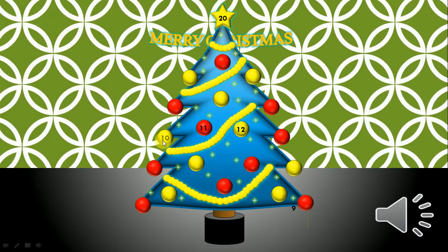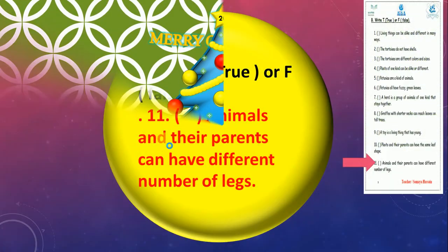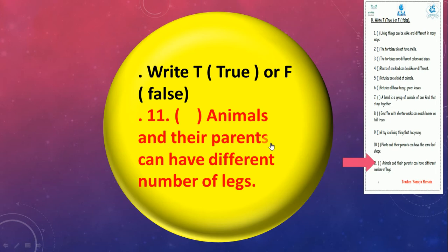Number ten: Animals and their parents can have different number of legs. Do you think? No, of course not, so we're gonna write F.